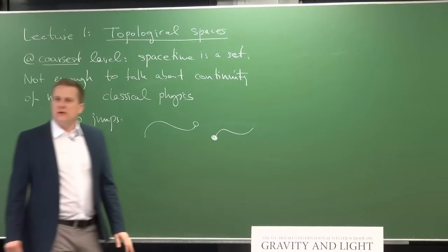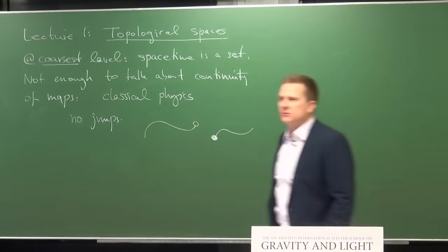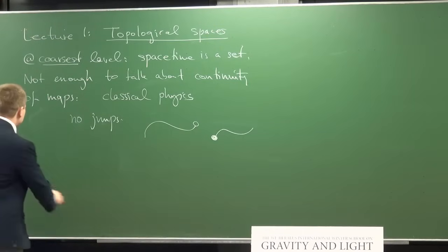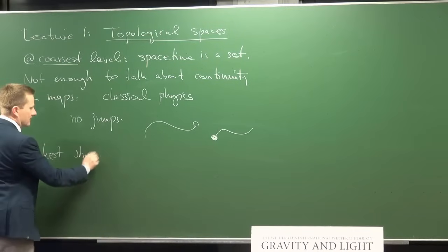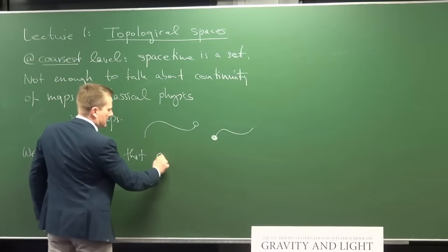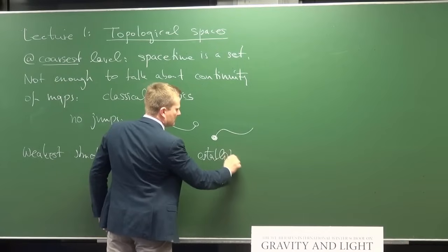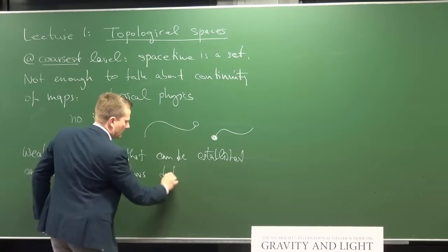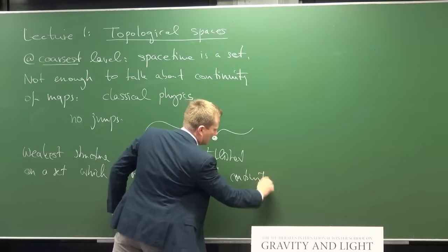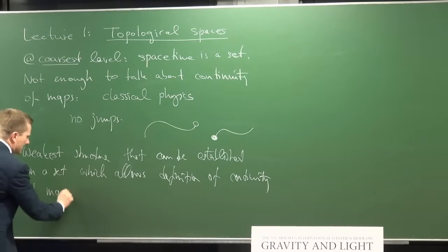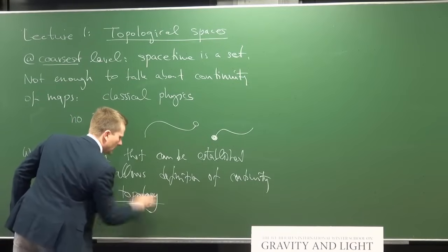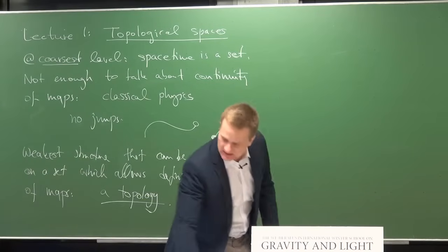We need to be very minimal and economic in order not to introduce undue assumptions. So we're interested in the weakest structure we can establish on a set — the weakest structure that allows a good definition of continuity of maps. Mathematicians know that the weakest such structure is a so-called topology. This is the reason for the classical physicist to look at topologies.